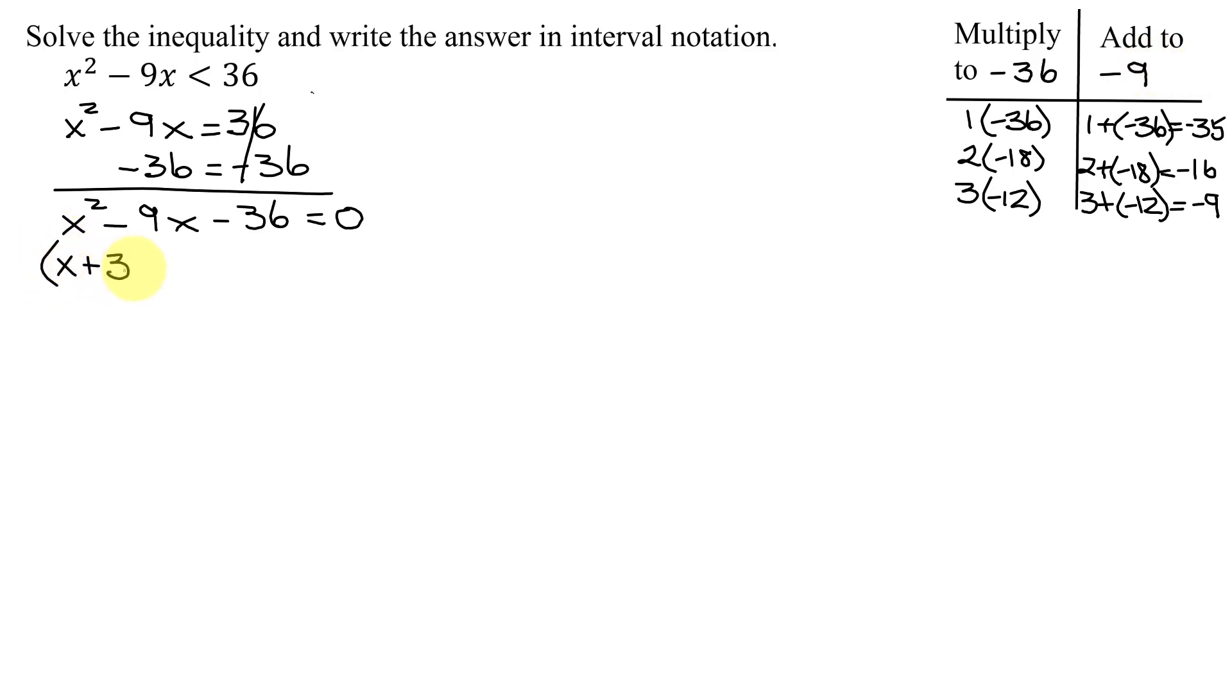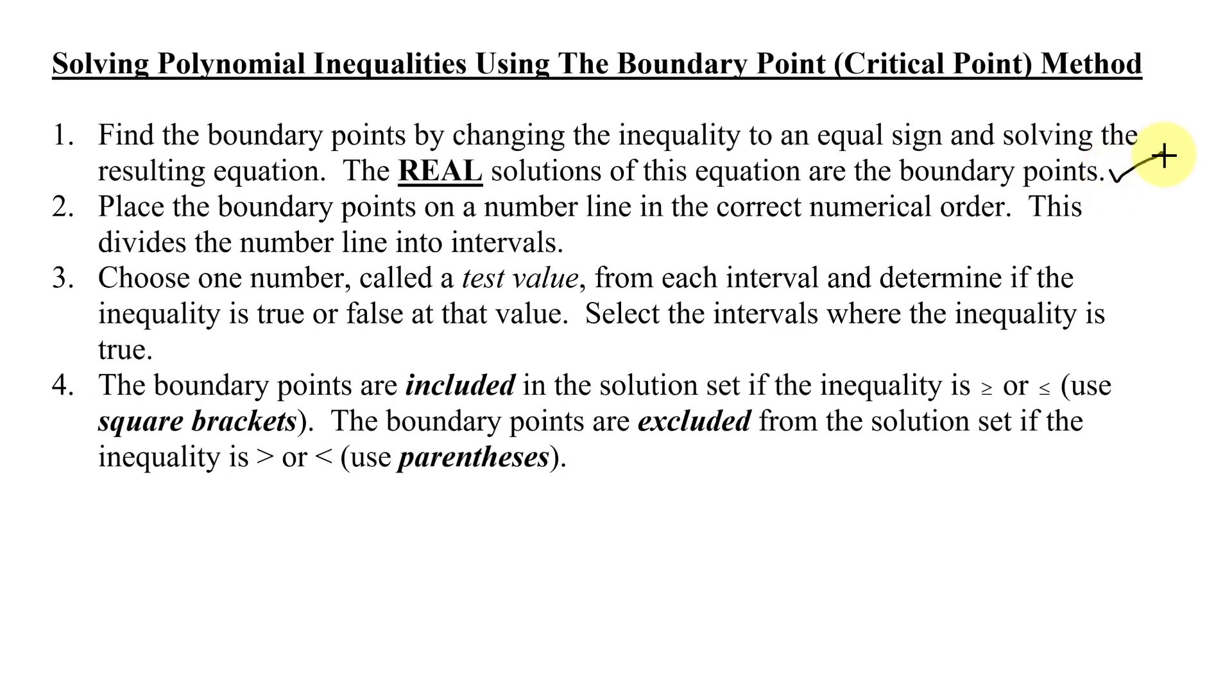So I'm going to get x plus 3 times x minus 12 equals 0. Two factors multiplied together equals 0. Set each of them equal to 0. x plus 3 equals 0, and x minus 12 equals 0. From the first one, subtract 3 from both sides. You get x equals negative 3. And from the second one, add 12 to both sides. You get x equals positive 12. So these x values are the boundary points for this problem. So I have completed step 1.